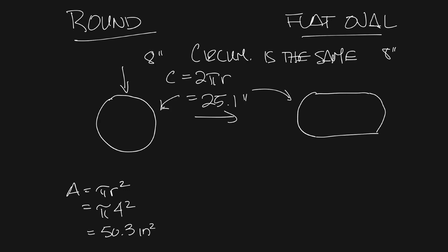For the flat oval, let's make this easy and say that the two ends combined to make a 5 inch circle. So the area of the 5 inch circle would be π times r², which is 2.5² times π is 19.6 square inches.